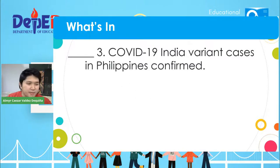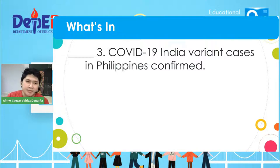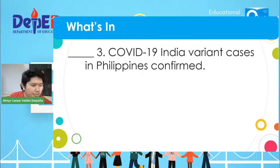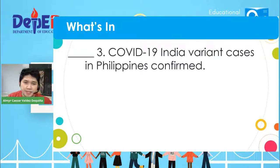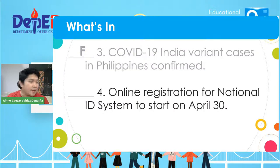Item number three: COVID-19 India variant cases in the Philippines confirmed. Zai Rivera, Shima Gablinas, and Gretchen Rehensha all answered fact — and you were all correct. Number three is a fact. And number four: Online registration for national ID system to start on April 30. Enchel Keith Pasqua, Ilana May Miren, and Sophia Athena Perulina all answered F — you are all correct.